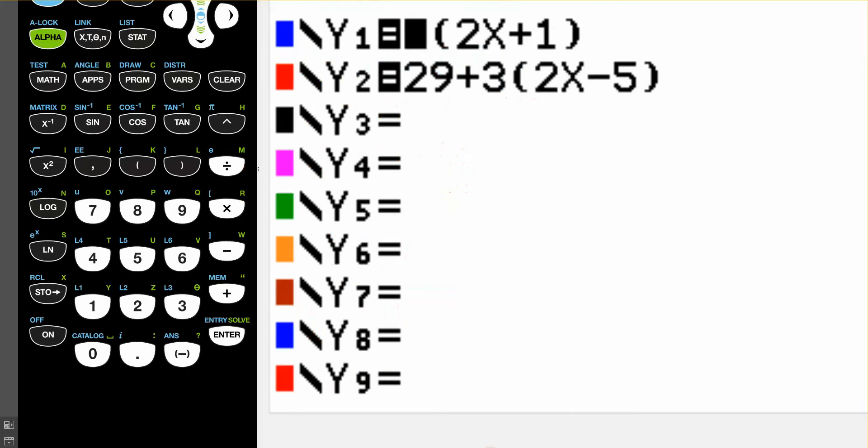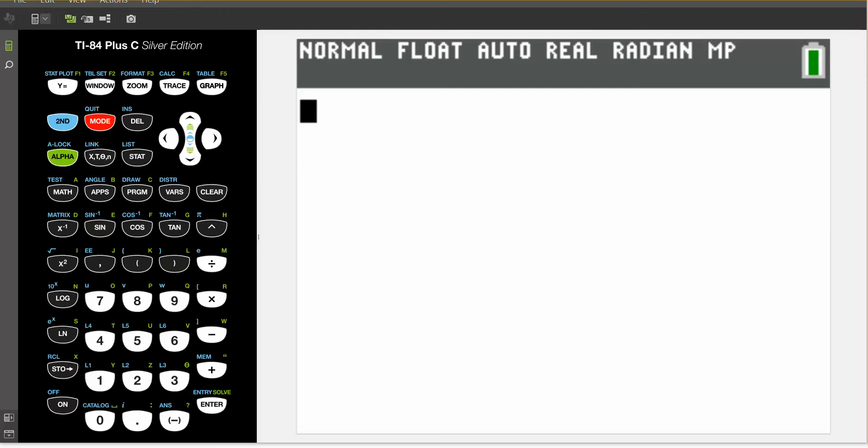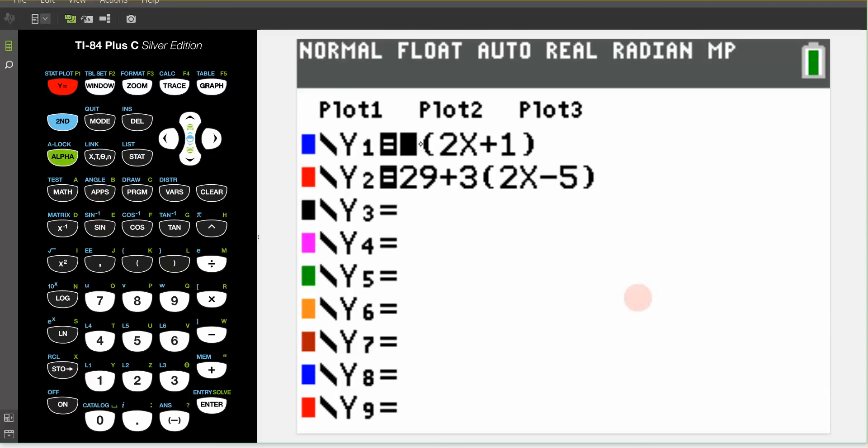So I have my graphing calculator here, and let me make it a little bit smaller for you. Okay, so now I think you can see my screen a little bit better. This is my TI-84 graphing calculator, and I'm going to show you how I would graph those two lines. So if I went to the y equals up here, notice that in the y1 position, I have typed in that equation that was on the left-hand side of the equal sign, and here under y2, I have the equation for the right-hand side of what we were looking at.